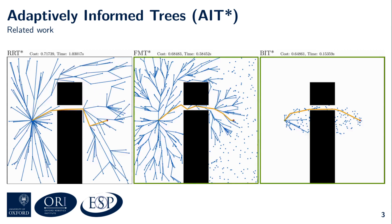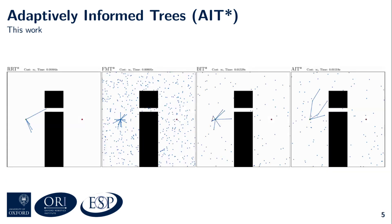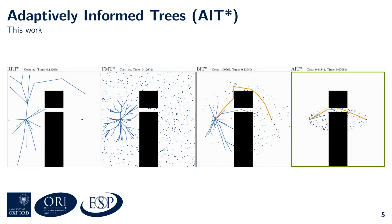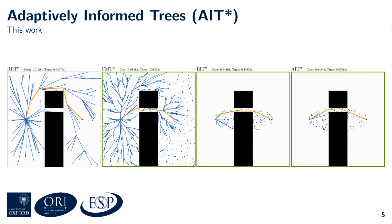Let me add AIT* to this comparison. AIT* finds a sufficiently good solution in just 0.07 seconds. The next best planner is BIT*, which takes more than twice as long. FMT* takes 8, and RRT* takes almost 16 times as long as AIT* to find a solution of similar quality on this problem.